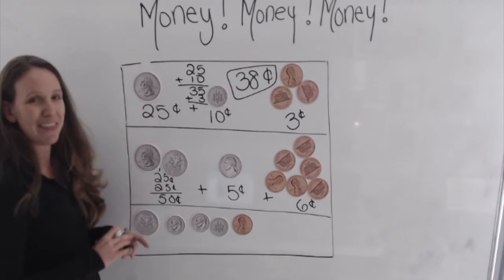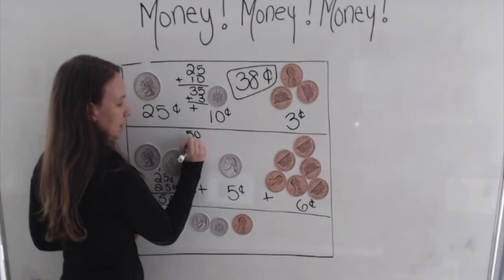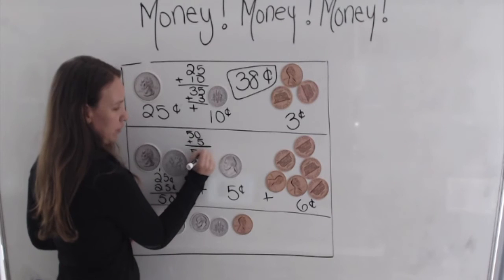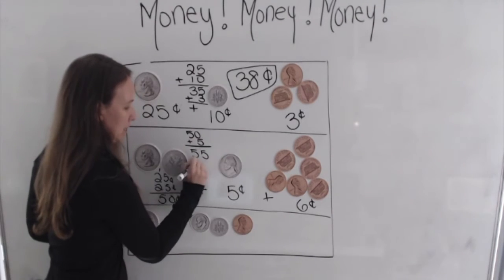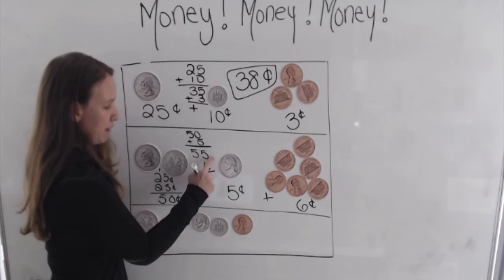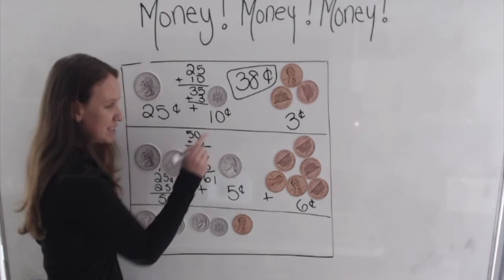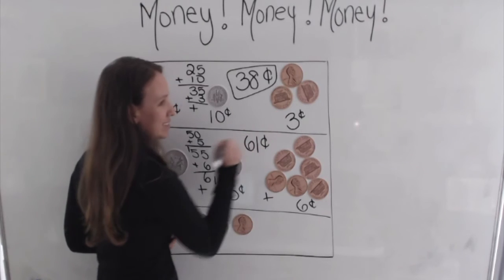And now let's add them all up. So 50 plus 5 is 55. 55 plus 6, five plus six is 11, carry the one, five plus one is six. So in total, we have 61 cents.